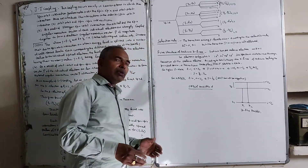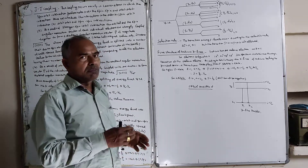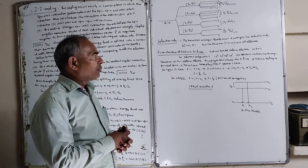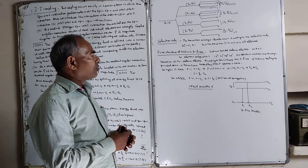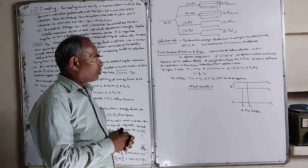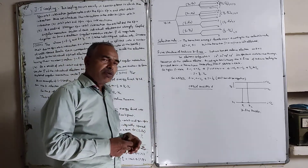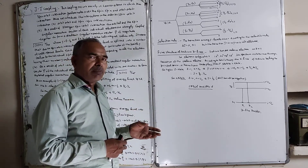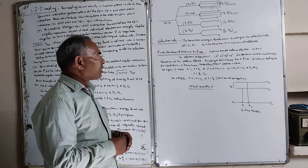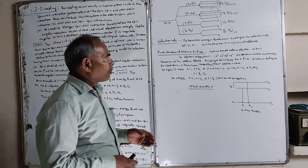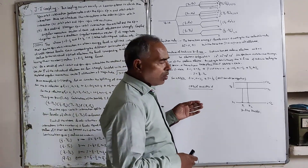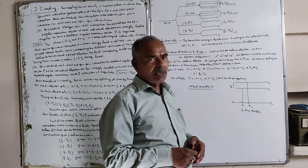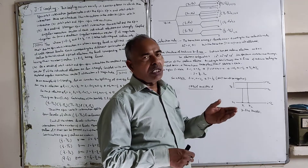When energy is given to the atom by any means, the 3s electron moves to a higher orbit, specifically to 3p. The spectrum is obtained through the transition of the valence electron. The D lines of sodium belong to the principal series, meaning transitions take place from the P state to the S state. After a certain time of about 10 to the minus 8 to 10 to the minus 10 seconds, the electron returns from the higher state to the lower state.